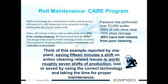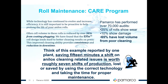Think about it this way: saving 15 minutes a shift on anilox cleaning issues is worth roughly seven shifts of production in the course of a year. If you're able to reduce or eliminate that 15 minutes, you're able to produce extra production time, but more importantly, you're able to save the cost of that downtime in relationship to saleable product.